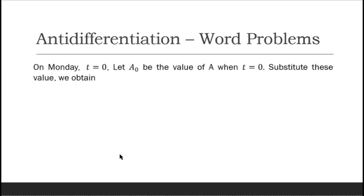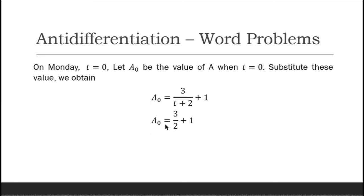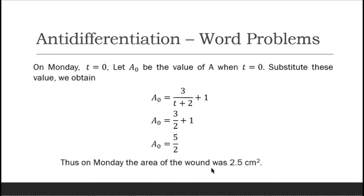For Monday, let t = 0 and we use A₀ as the value of A when t = 0. Substituting into our equation: A₀ = 3/(0 + 2) + 1 = 3/2 + 1 = 5/2.